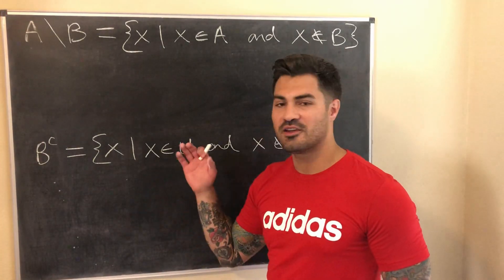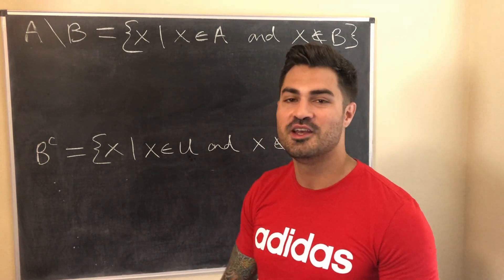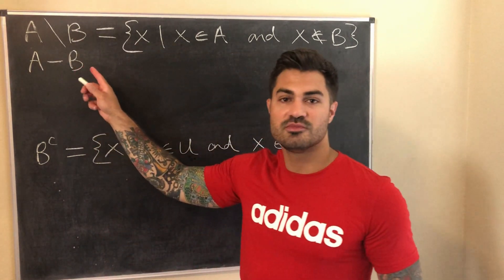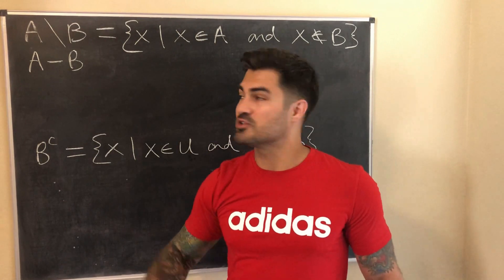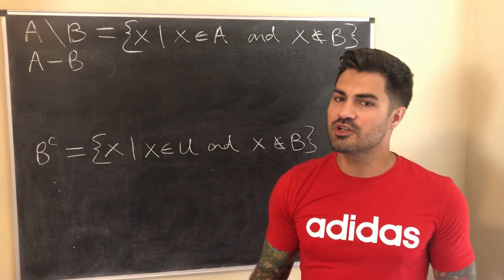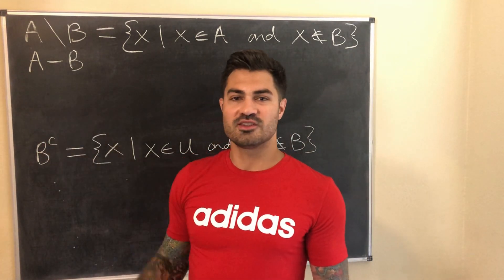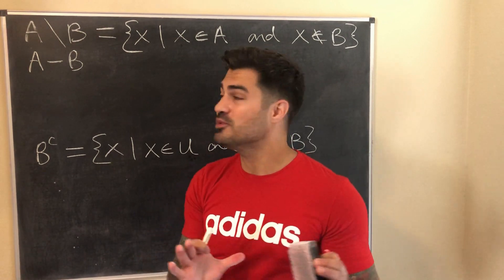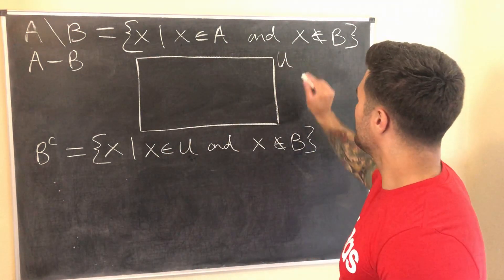Now let's define set difference and complement. Set difference A minus B — you may also see this written with a backslash — is defined as all the elements that are in A and not in B. This lines up with the intuition of subtraction: we start with all elements of A, then take away whichever of those elements are also in B, and what remains is the set difference.